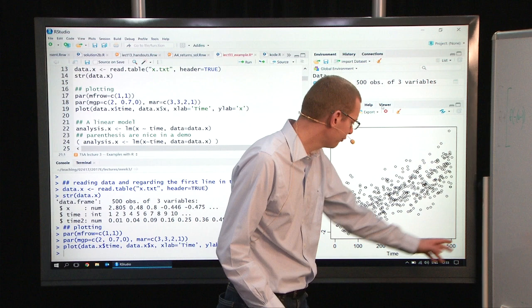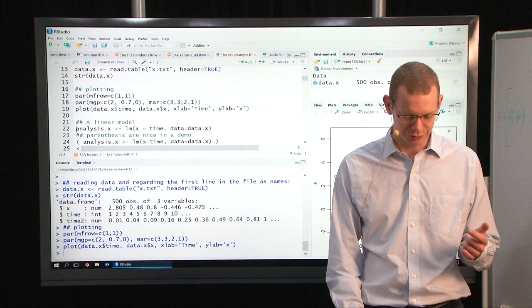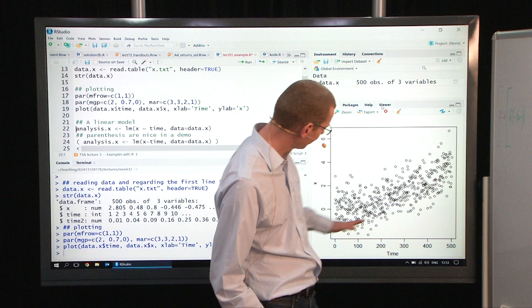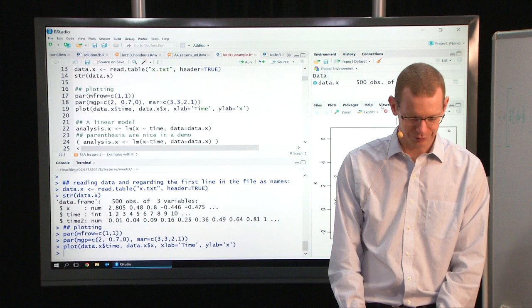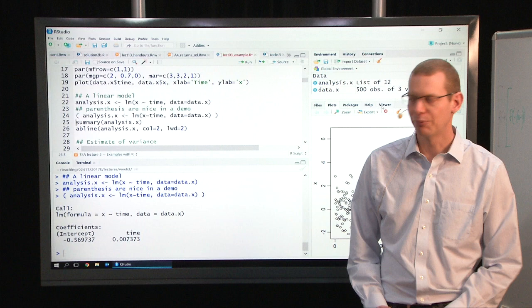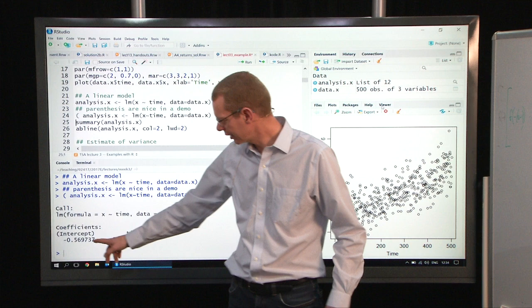You can see the plot here behind me. We have a cloud of observations here, over 500 observation time points, and the first thing to do could be to just do a linear regression because it looks like you have some kind of a linear regression part here.